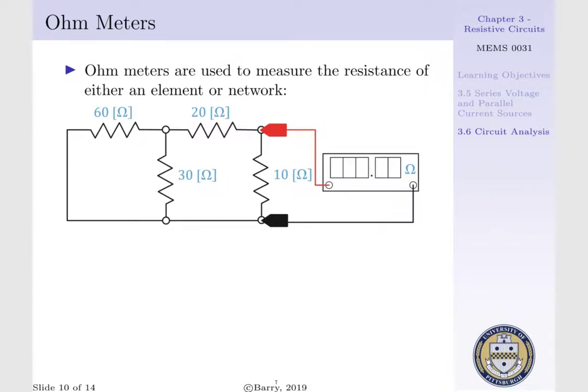In the picture below, we have an ohmmeter connected to a circuit network. We have a positive terminal at the red lead and a negative terminal at the black lead.